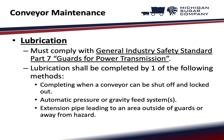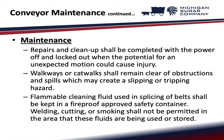Lubrication must comply with General Industry Safety Standard, Part 7, Guards for Power Transmission. Lubrication shall be completed by one of the following methods: completing when a conveyor can be shut off and locked out, automatic pressure or gravity feed systems, or extension pipe leading to an area outside of guards or away from the hazard.